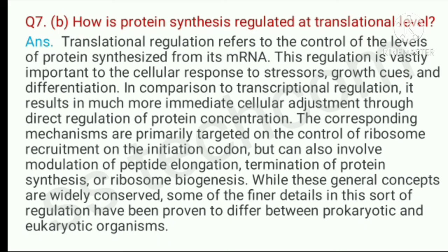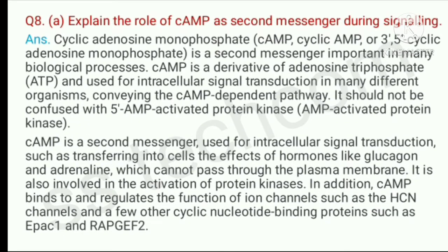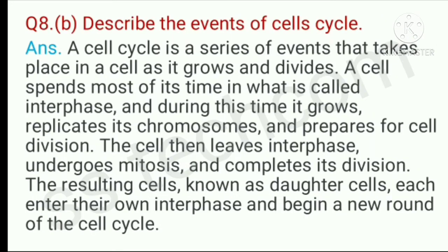Question number 7, B part: How is protein synthesis regulated at the translational level? Question number 8, A part: Explain the role of cyclic adenosine monophosphate (cAMP) as a second messenger during signaling. Question number 8, B part: Describe the events of the cell cycle.